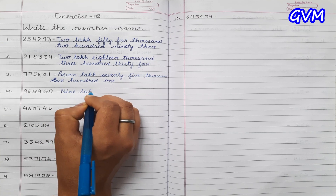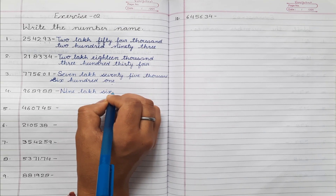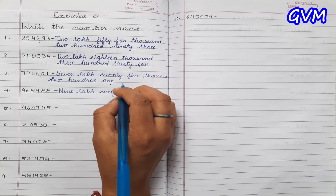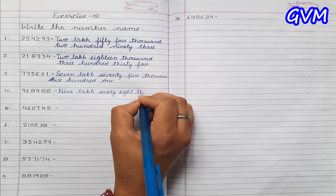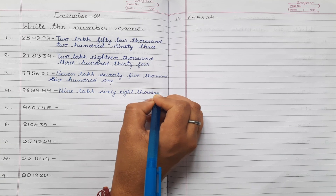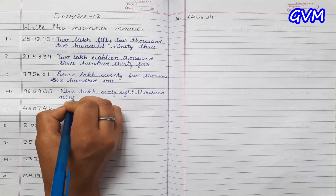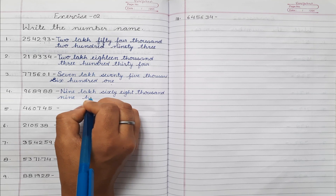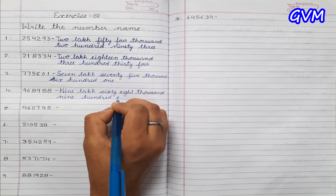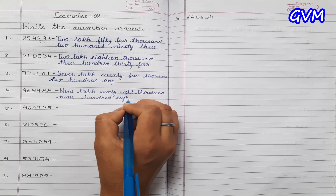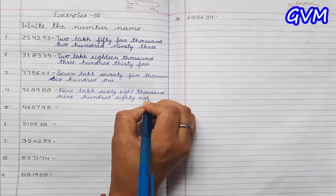S-I-X-T-Y — 60, E-I-G-H-T — 8, T-H-O-U-S-A-N-D — thousand, 1000. N-I-N-E — 9, H-U-N-D-R-E-D — hundred, 100. E-I-G-H-T-Y — 80, E-I-G-H-T — 8. Answer: nine lakh sixty eight thousand nine hundred eighty eight.